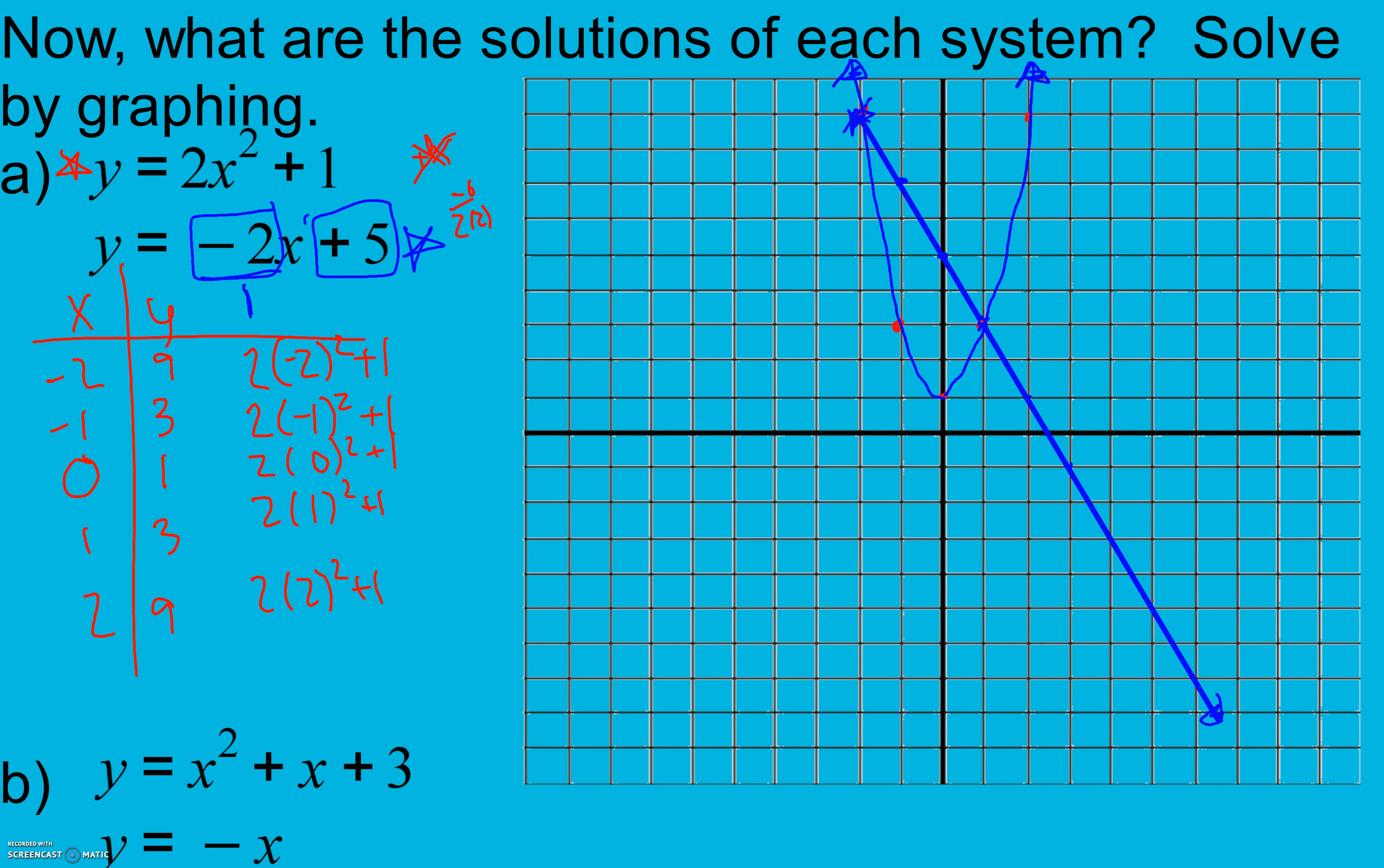And our parabola here. And where they meet, remember, our solutions. So 1 is going to be at 1, 3. The second one is going to be at negative 2, 9. And these ordered pairs are the set of x's and y's that make both equations true. There are solutions.